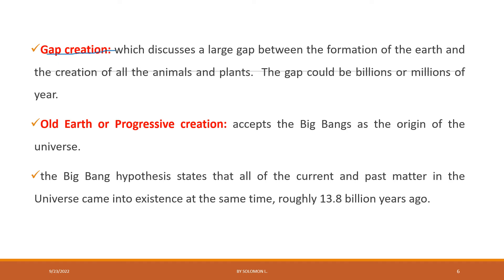The first sub-type is gap creation. This theory discusses large gaps between the formation of the earth and the creation of all plants and animals. The earth and living things were made by God, but there was a gap between the formation of the earth and the creation of animals and plants. The gap could be billions or millions of years.